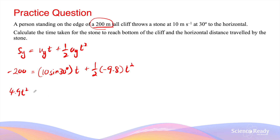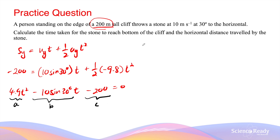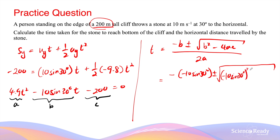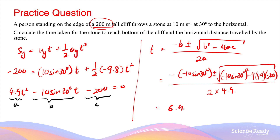Rearranging gives: 4.9t² − (10·sin30°)·t − 200 = 0. Here, a = 4.9, b = −10·sin30°, and c = −200. Applying the quadratic formula t = (−b ± √(b² − 4ac)) / 2a, and taking the positive root, this gives t = 6.9 seconds.